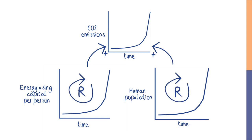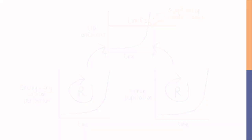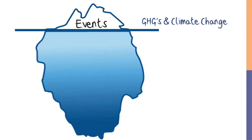Like everything that grows exponentially on a finite planet, CO2 emissions are running into limits, which produce the symptoms of climate change. Greenhouse gas emissions and climate change are not the root causes — not the deepest challenges at the bottom of the iceberg.